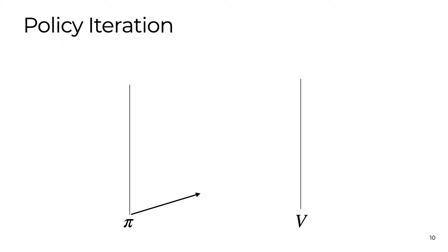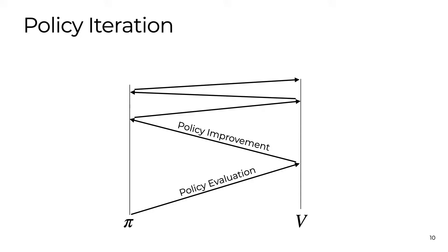So, our general approach is going to be to interleave evaluating the policy by estimating the value function and updating the policy based on our most up-to-date value function. This procedure is called policy iteration and is guaranteed in this discrete case to converge to the optimal policy and value function.